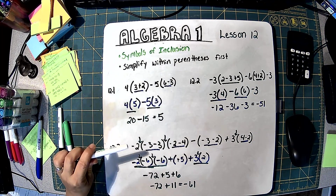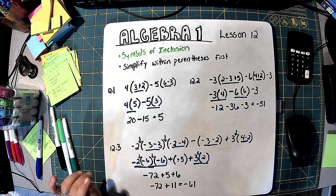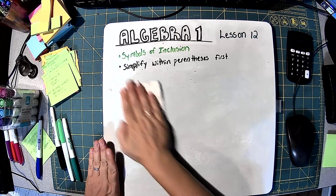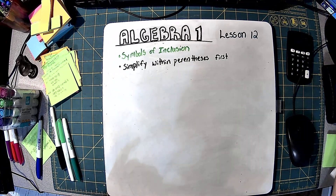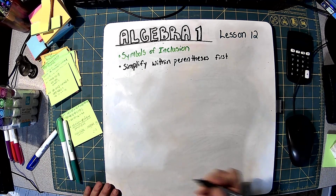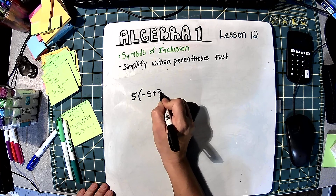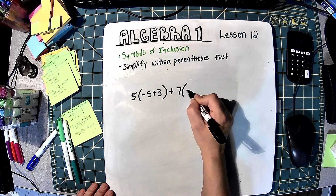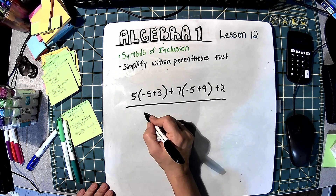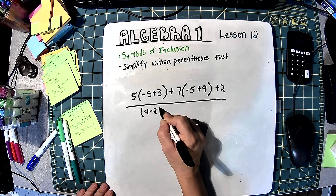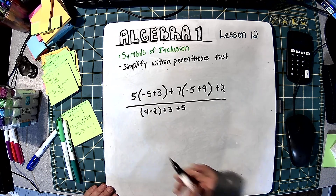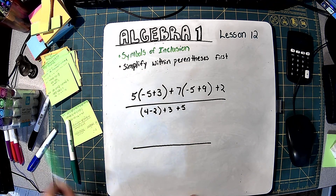Be really careful with these on where you're multiplying and where you're adding and subtracting. You want to work everything inside the parentheses first. The next one's a little different from those because it's a fraction, so we're going to try it. I'm going to make a new fraction line and work inside the parentheses first.